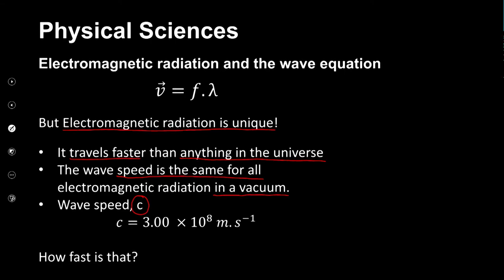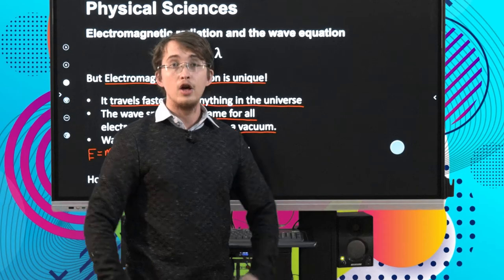c is equal to 3 × 10⁸ meters per second. c is a very important variable in physics — not just for waves. You may have encountered it even in one of the most famous physics equations ever: Einstein's own E = mc². That c you see there is the exact same c that we are referring to — the speed of light.